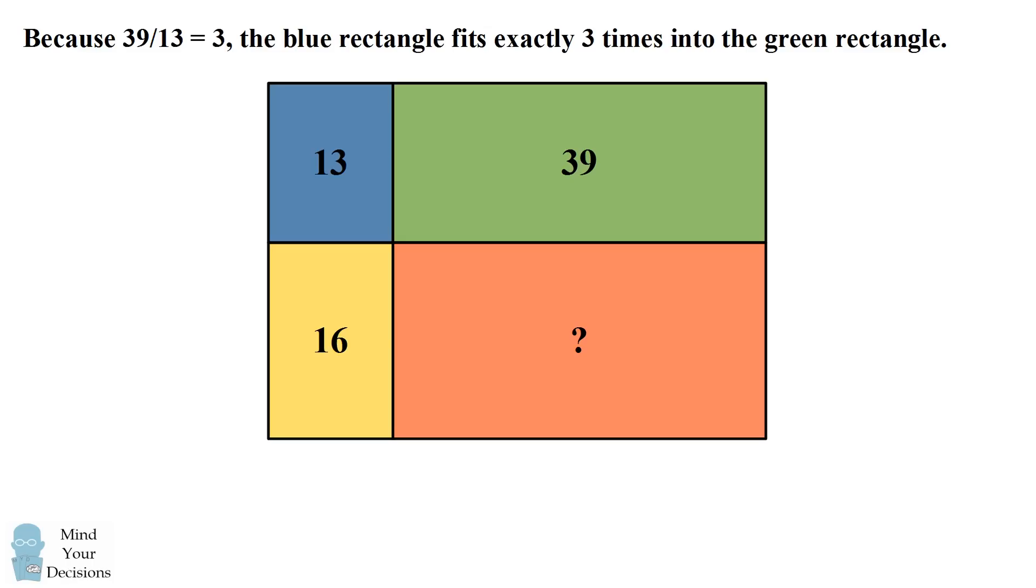Because the area of the green rectangle is three times the area of the blue rectangle, this means the blue rectangle fits exactly three times into the green rectangle. The green rectangle has the width that is three times the blue rectangle.